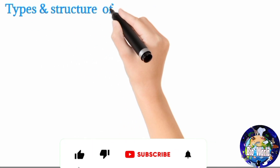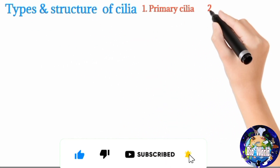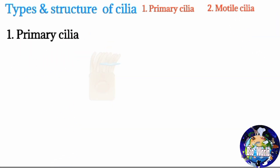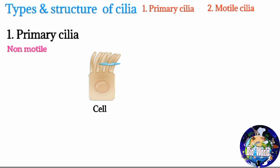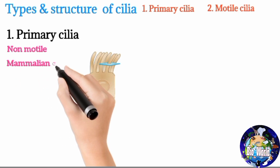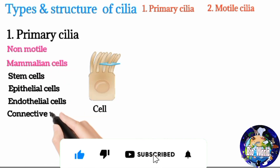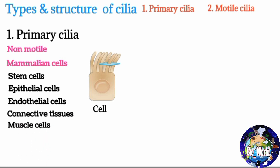There are two types of cilia: one, primary cilia, and two, motile cilia. Primary cilia are non-motile cilia projected from the apical surface of cells. Primary cilia are found in different mammalian cells like stem cells, epithelial cells, endothelial cells, connective tissue, and muscle cells.